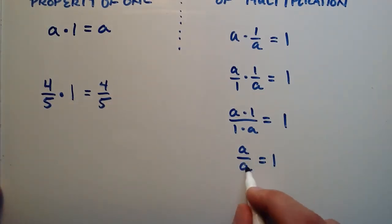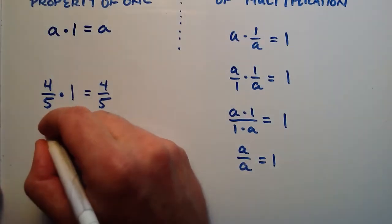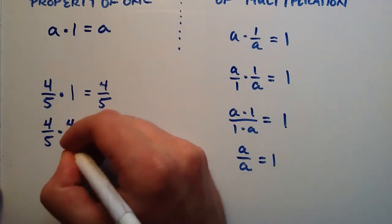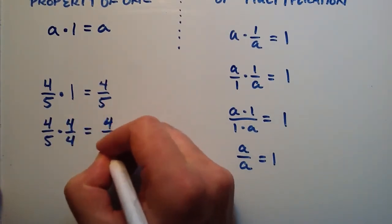So 4 over 4 equals 1. 4 would be our a. Okay, so this becomes 4 fifths times 4 over 4 is equal to 4 fifths.